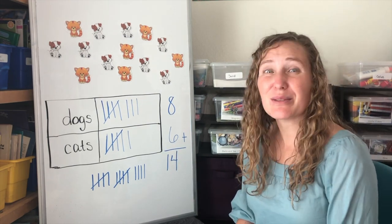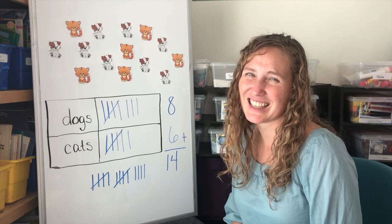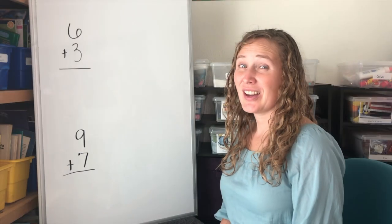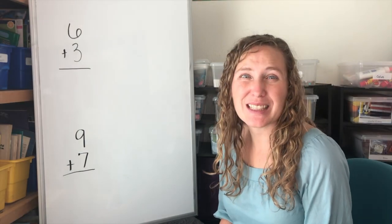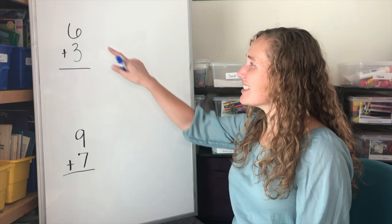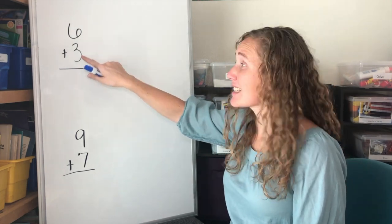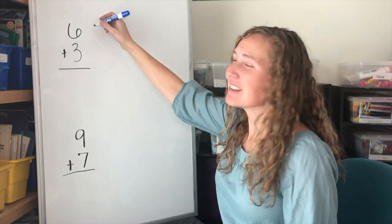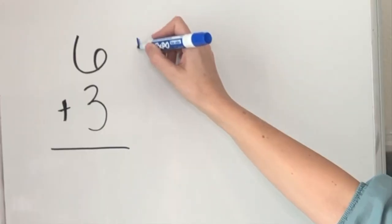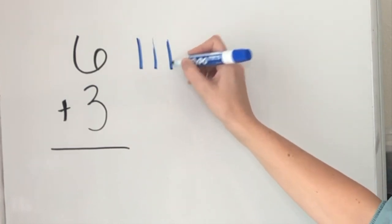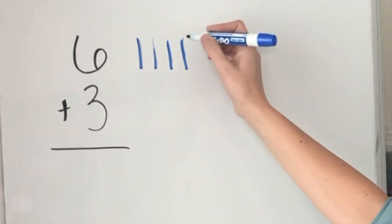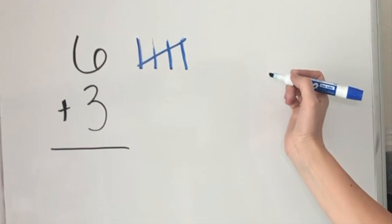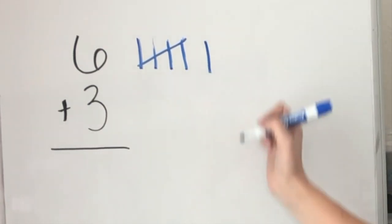Let's do some more tally mark addition. Are you ready to add with tallies? Let's start with six plus three. Six. Let's make six tally marks. One, two, three, four. Remember our fifth is always a slash. Six. Six tally marks.